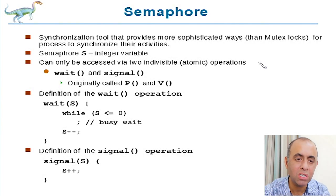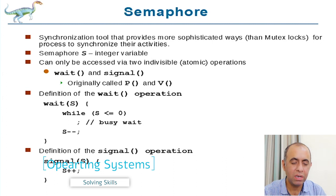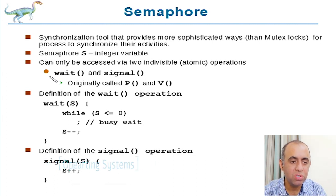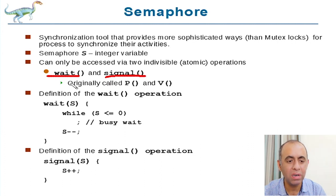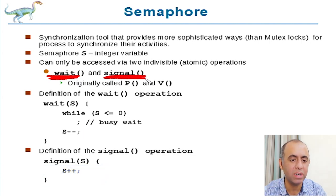There is another concept called semaphore. Semaphore is another tool. Semaphores are signaling methods which are used in railways. We have adopted this name for our context, and in this context, semaphore is something which uses two function calls. One is called wait, the other is called signal. Wait is used in the entry section for the critical section, and signal is used for the exit section of the critical section, also called P and V.